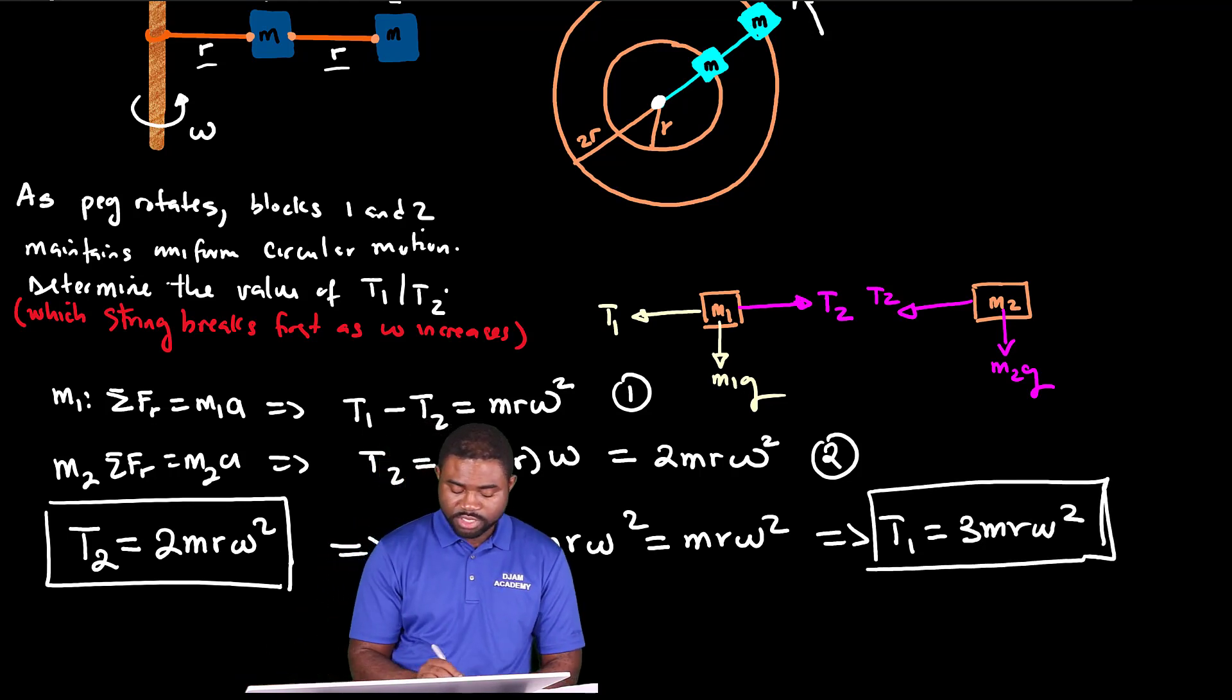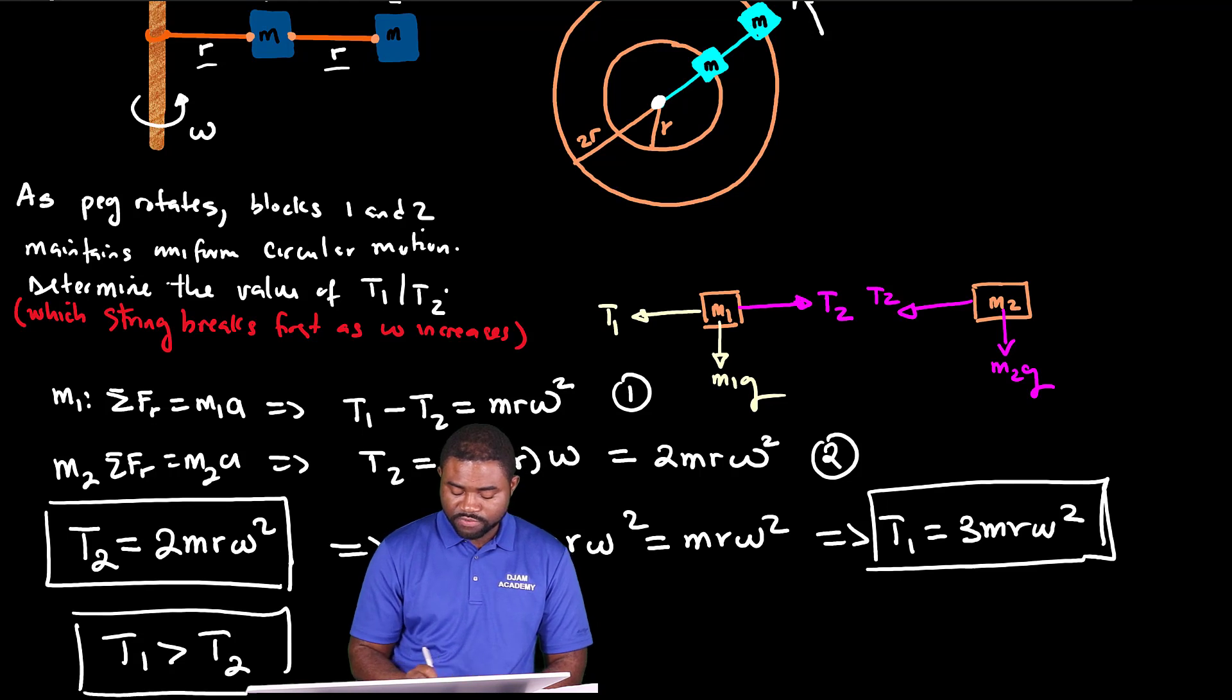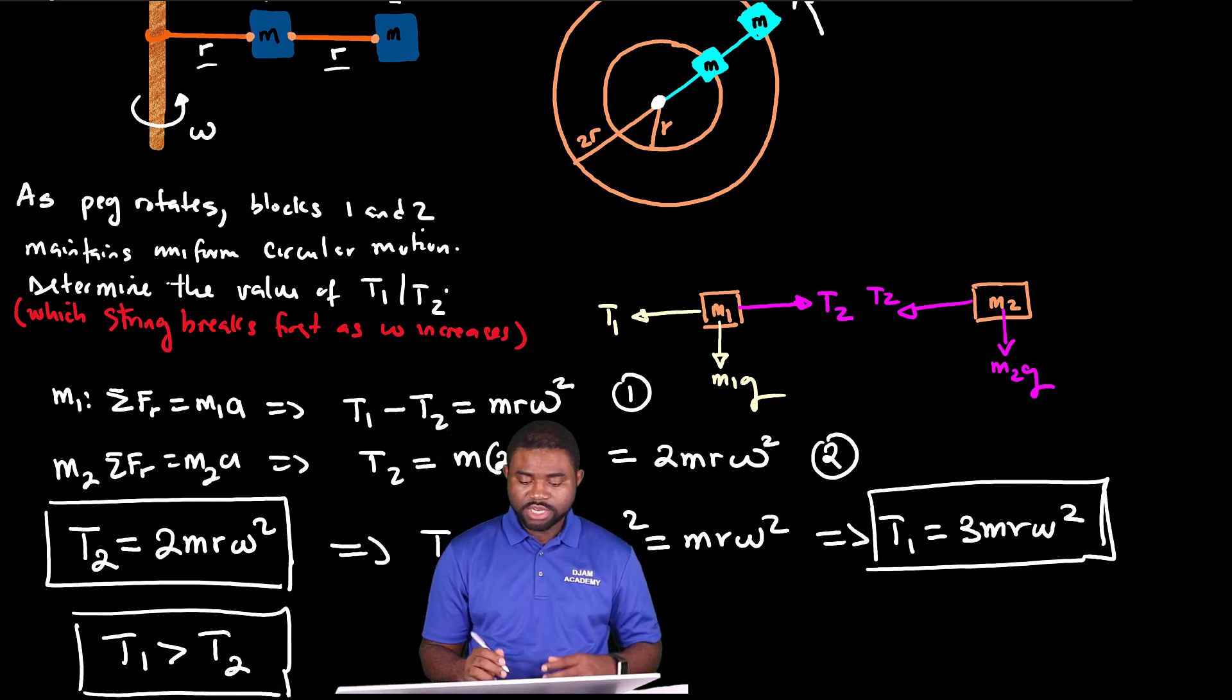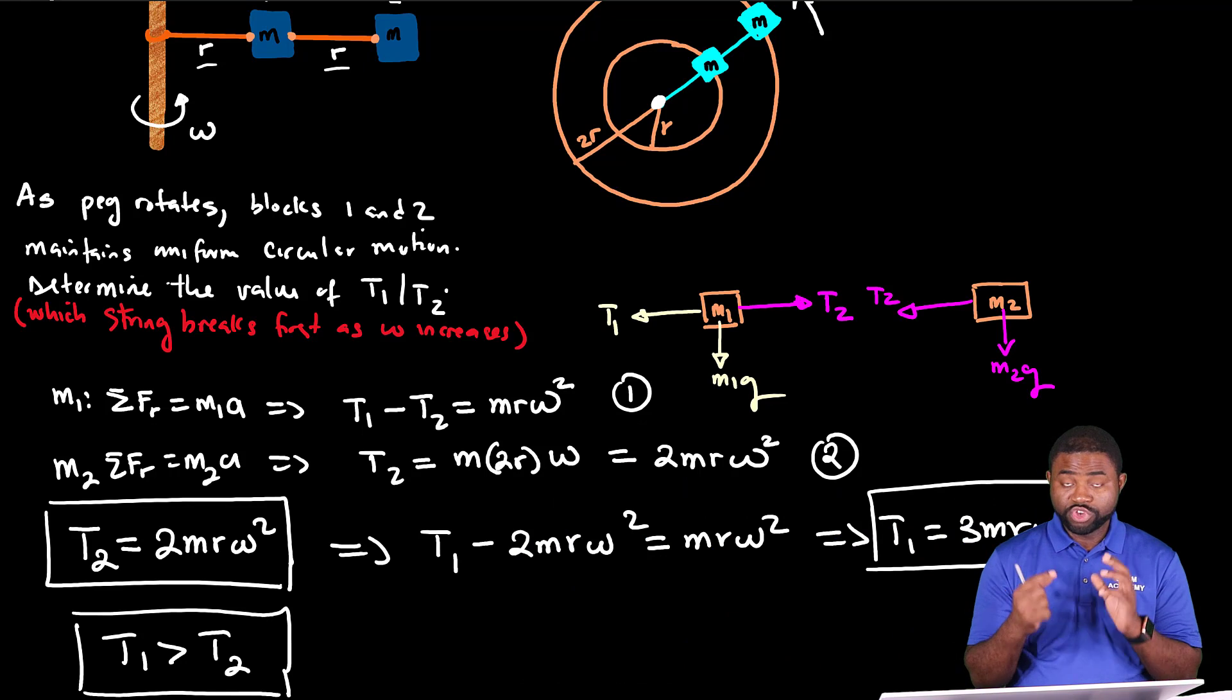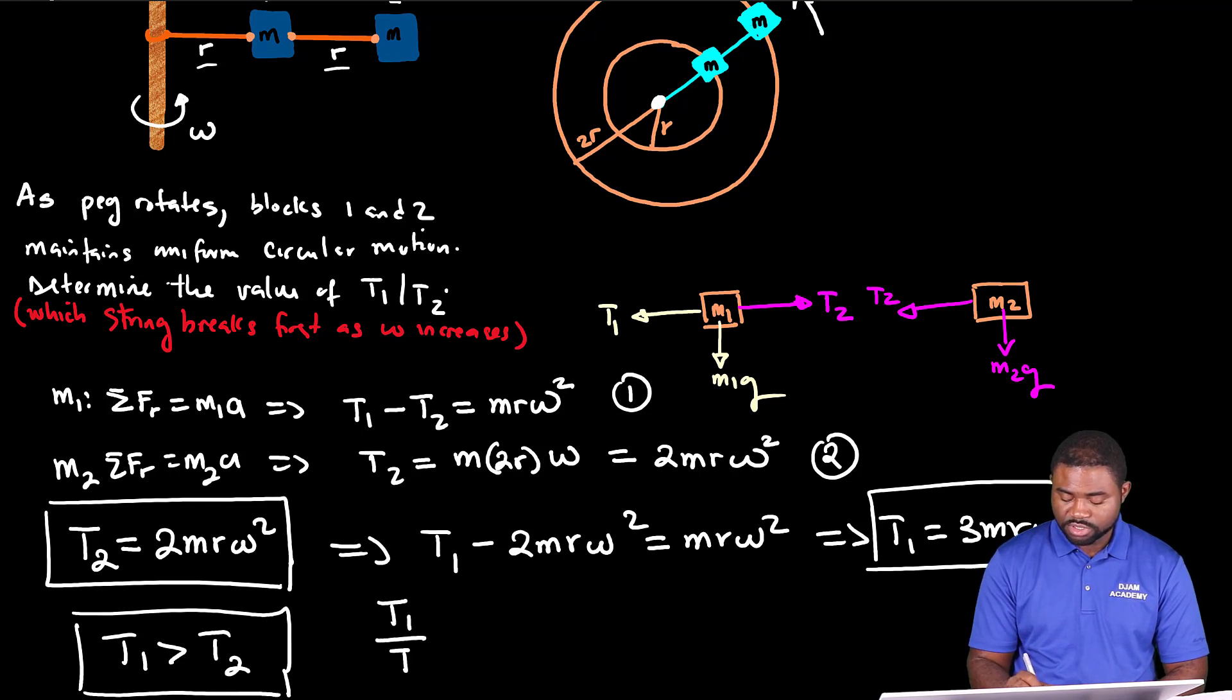Clearly, you can see that T1 is greater than T2. What does this imply? It means that as omega increases, string one will most likely break first.